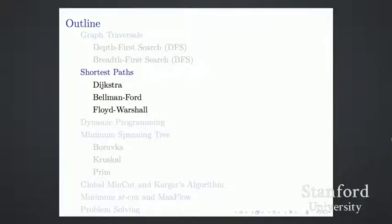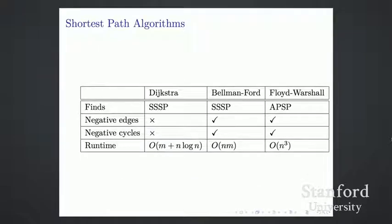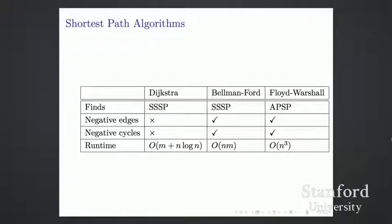The next topic is shortest path. We discussed three algorithms: Dijkstra, Bellman-Ford, and Floyd-Warshall. Dijkstra is the fastest but weakest — it finds single-source shortest paths only in graphs with no negative weight edges. Bellman-Ford does the same but works with negative weight edges. Floyd-Warshall does something stronger: it finds shortest paths between all pairs of vertices. You should look at the lecture notes and memorize or write the corresponding runtimes on your cheat sheet.